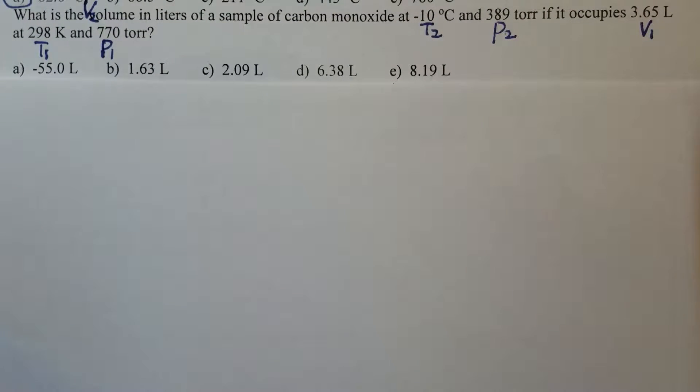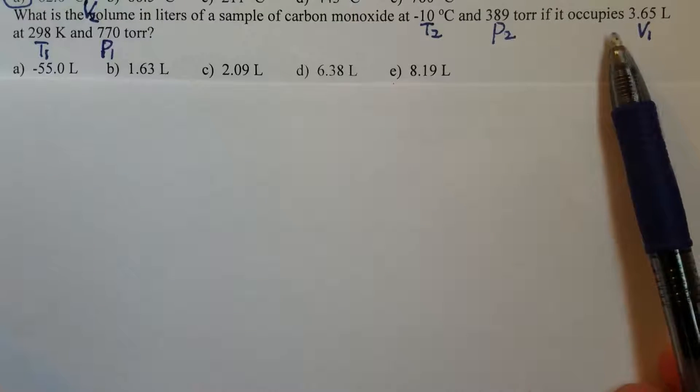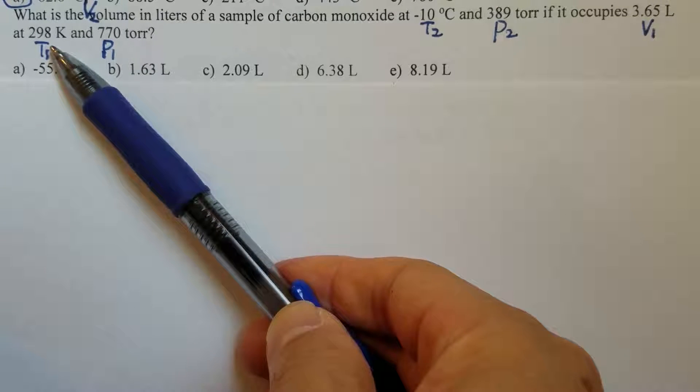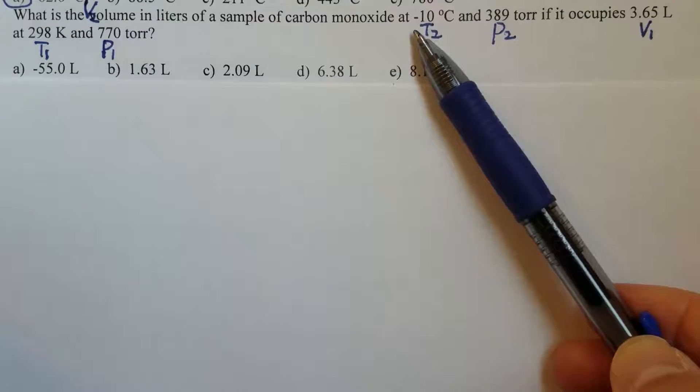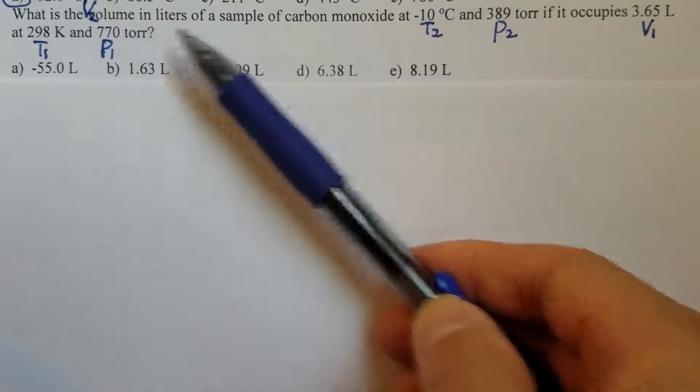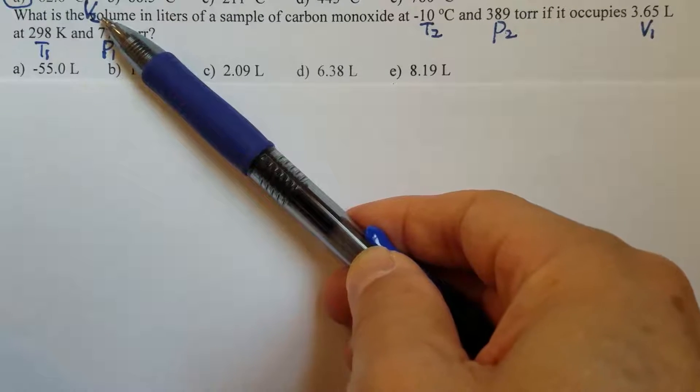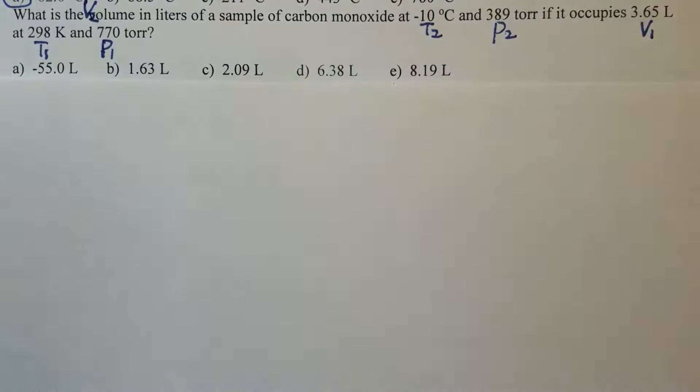Let's say that's before the change. And now the temperature is changed from 298 K to negative 10 degrees C, and then the pressure is also changed, we just need to find out the volume. So therefore, we will need the combined gas law here.